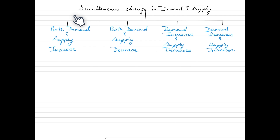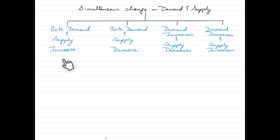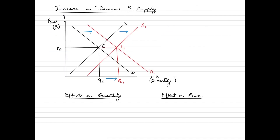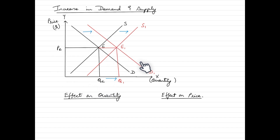In this video we shall focus only on the increase of both demand and supply — the other scenarios will come up in later videos. Let's see how an increase in both demand and supply impacts market equilibrium. We have an initial equilibrium at point E, where the corresponding price is Pe and the corresponding quantity is Qe.